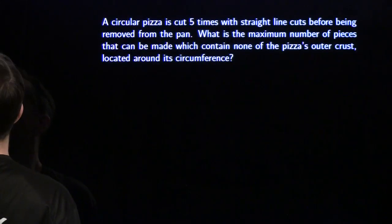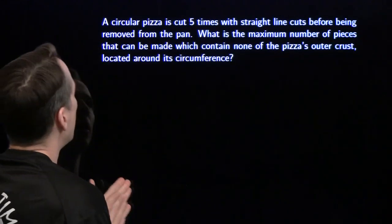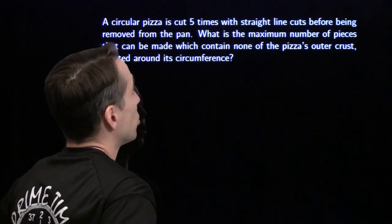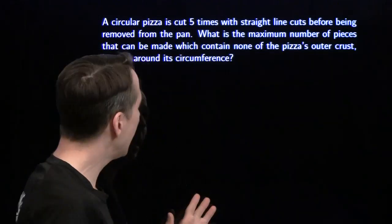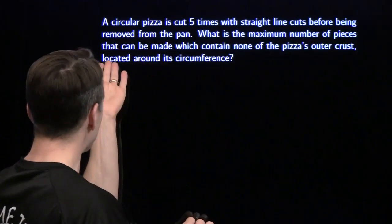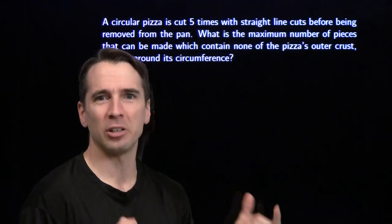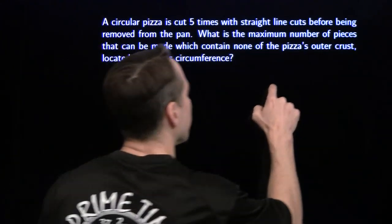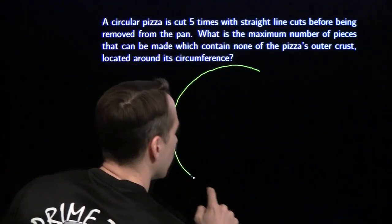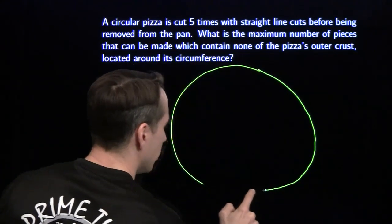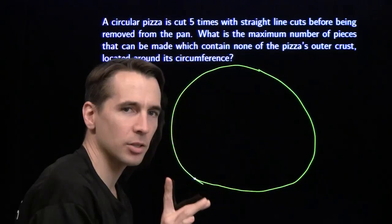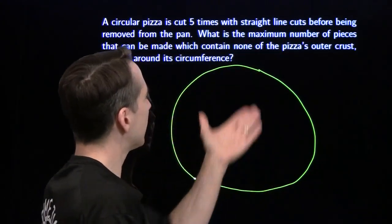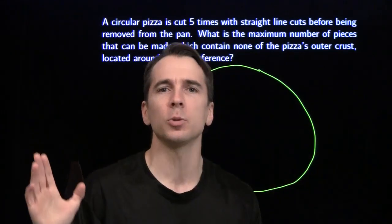Let's try pizza. Circular pizzas cut five times with straight line cuts before taking the pizza out of the pan, and we want the maximum number of pieces that contain none of the pizza's outer crust — the yummy pieces. Let's start with our constructive counting. We'll draw our pizza in a big circle and make five straight line cuts, thinking about how to make the maximum number of yummy pieces.